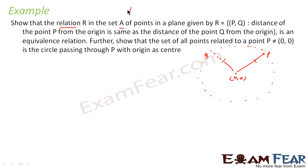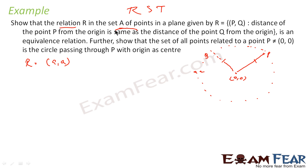To prove it is an equivalence relation, we have to prove that it is reflexive, symmetric, and transitive. For reflexive, I have to prove that (A, A) is a member of this relation. If there is a point A, the distance of point A from the center and the distance of point A from the center are the same — which is obviously true. So this is reflexive; that is, (A, A) is there.